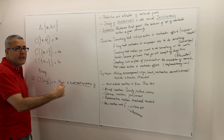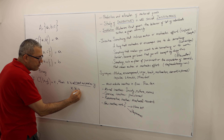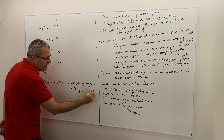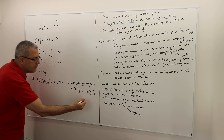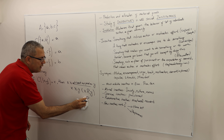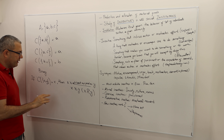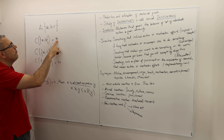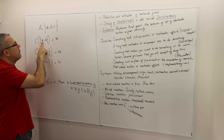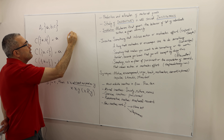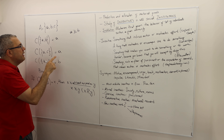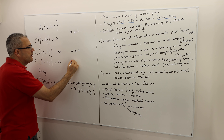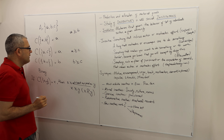Instead of writing 'at least as good as' repeatedly, we denote it as x ≿ y, or alternatively write x R y. Given our observations: because a was chosen over b, a is at least as good as b; because a was chosen over c, a is at least as good as c; and because b was chosen over c, b is at least as good as c.